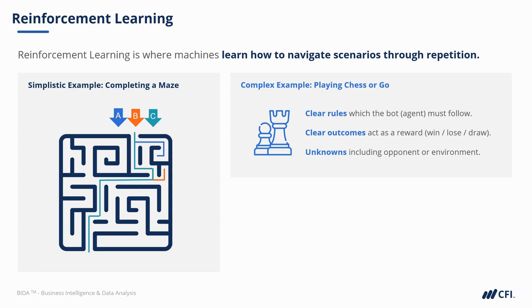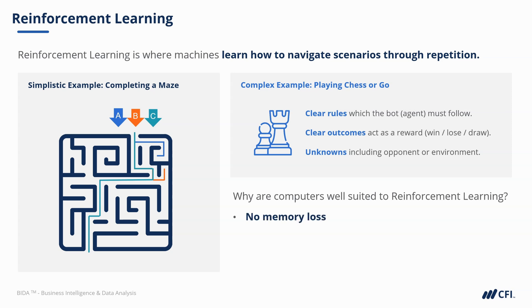There are three reasons why computers are well-suited to reinforcement learning. The first is that they have no memory loss. By storing data about previous scenarios, computers are capable of remembering all the details about all previous scenarios without experiencing that loss. Second, computers hold no recent memory biases. Humans are naturally biased — we underestimate unlikely outcomes and tend to place more weight on more recent memories.